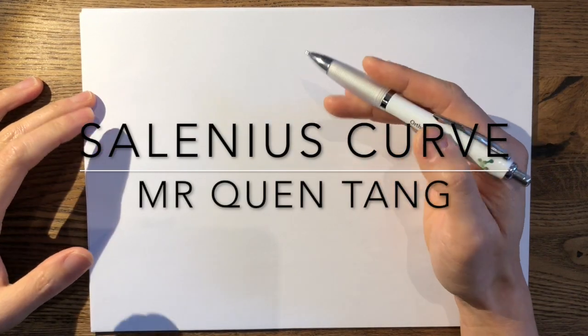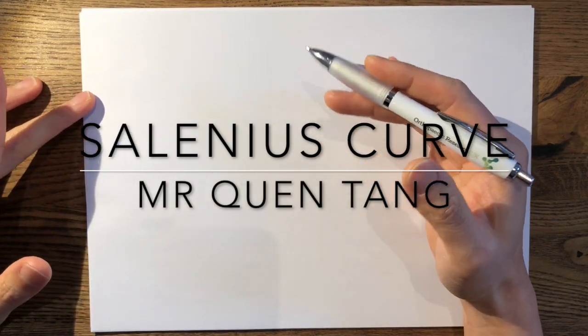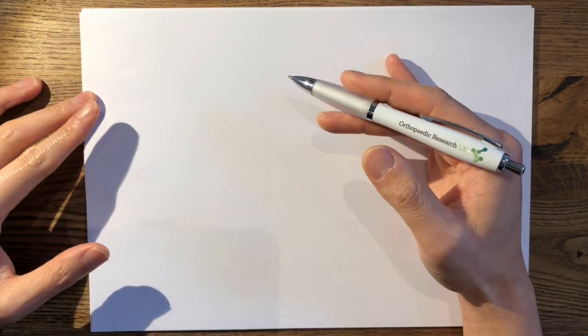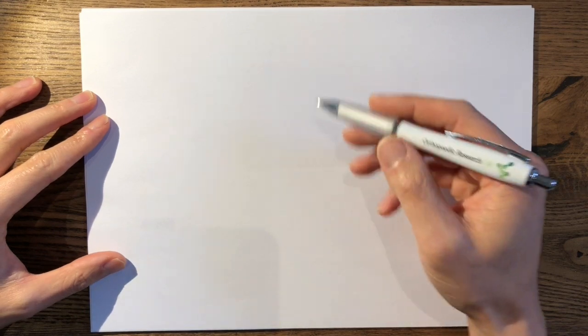In this video, I'm going to explain the Salineus graph, which is essentially a graph to explain the normal tibio-femoral angle in the coronal plane in accordance to the patient's age.